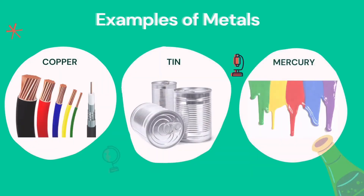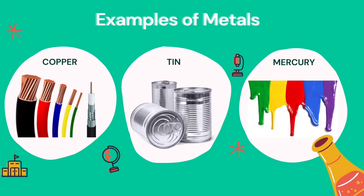Some examples of metals are copper, tin, and mercury. Copper is used in making electric cables and wires. Tin is used to coat other metals to prevent corrosion, such as in tin cans, which are made of tin-coated steel. One special type of metal is mercury, since it is the only metallic element that is liquid at room temperature.